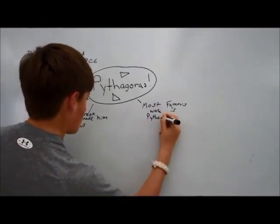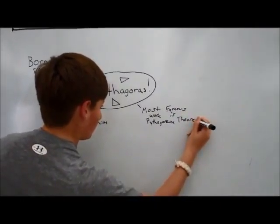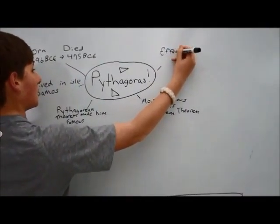His most famous work is the Pythagorean theorem, which states that the square of the hypotenuse of a right triangle is equal to the sum of the squares of the other two sides.